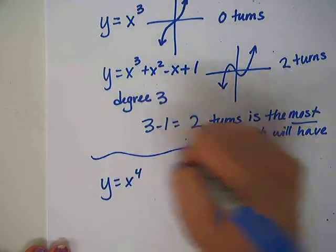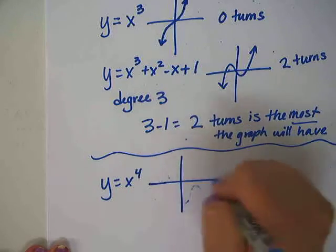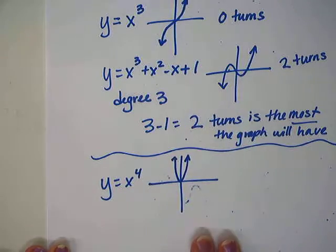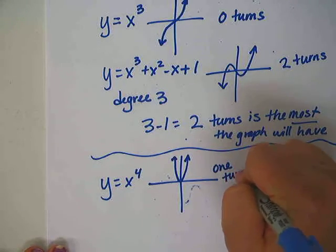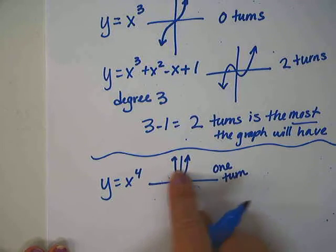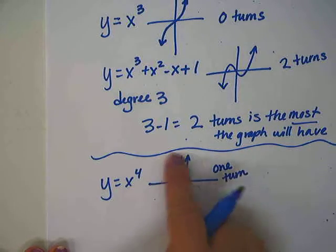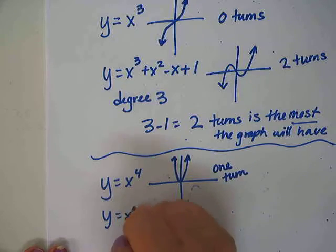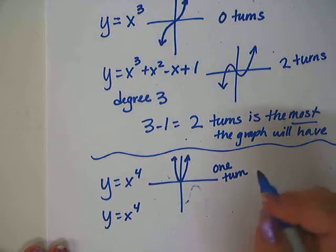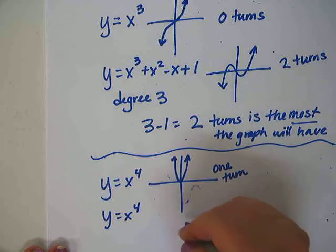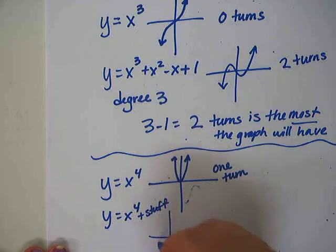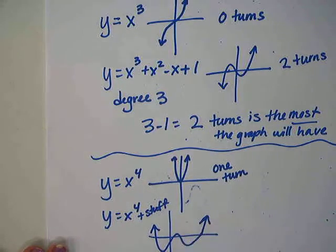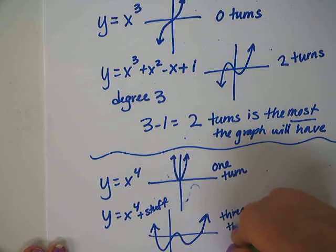Let's look at y equals x to the 4th. This graph looks a lot like a parabola with the ends going up. This one has one turn. You cannot have an even degree without having at least one turn because it has to change directions. But then other stuff might be added to it so that it could possibly have 1, 2, 3 turns.